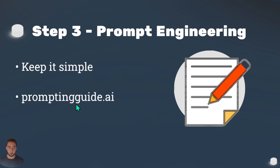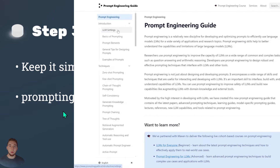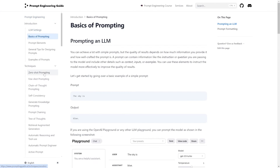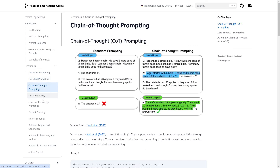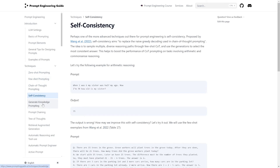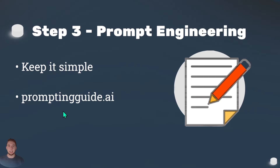There is just one resource I highly recommend: promptingguide.ai. It's a website that walks you through all the prompt engineering techniques in a very concise way — things like chain of thought, self-reflection, one-shot, few-shot, and all the different techniques. You want to have that in your back pocket as you start creating prompts within your AI application. Don't spend a lot of time on it, but make sure you have the groundwork done.